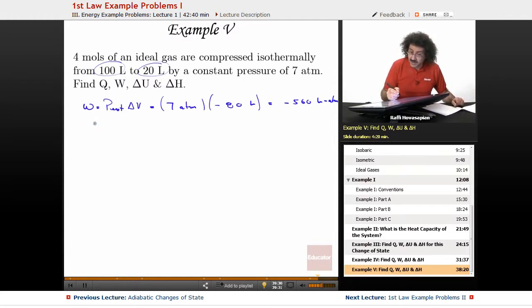Well, minus 560. Let's go ahead and convert this to joules. Minus 560 liter atmosphere times 8.314 joules divided by 0.08206 liter atmosphere. That cancels. You end up with, I'm going to express this in kilojoules, minus 56.7 kilojoules.